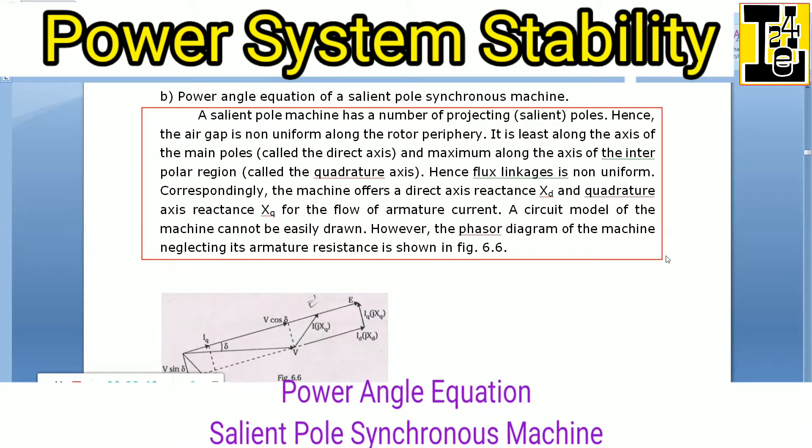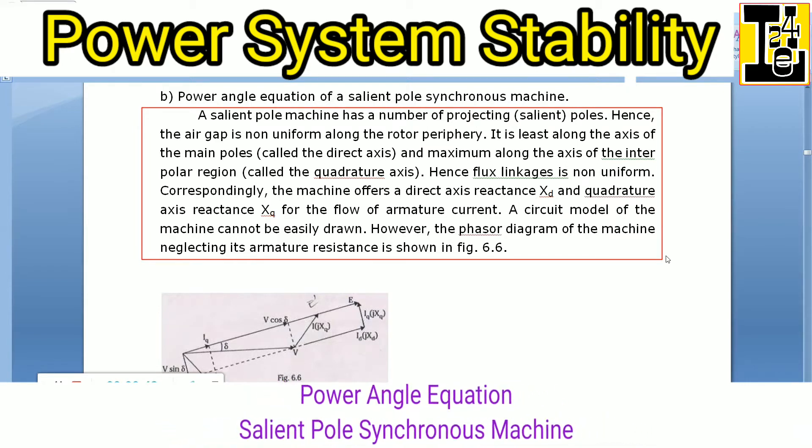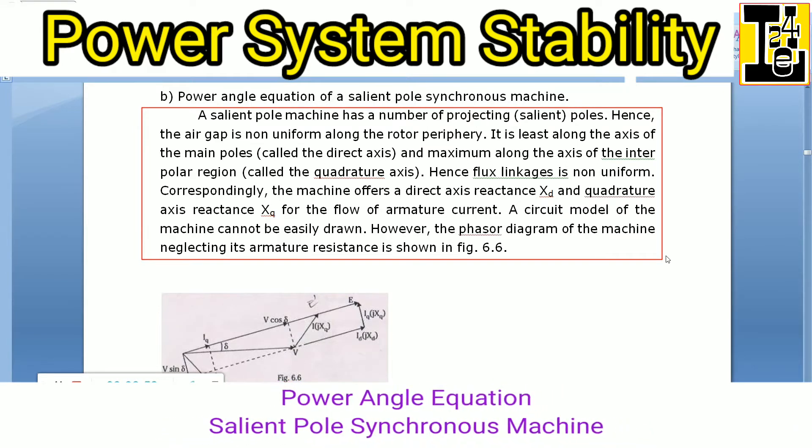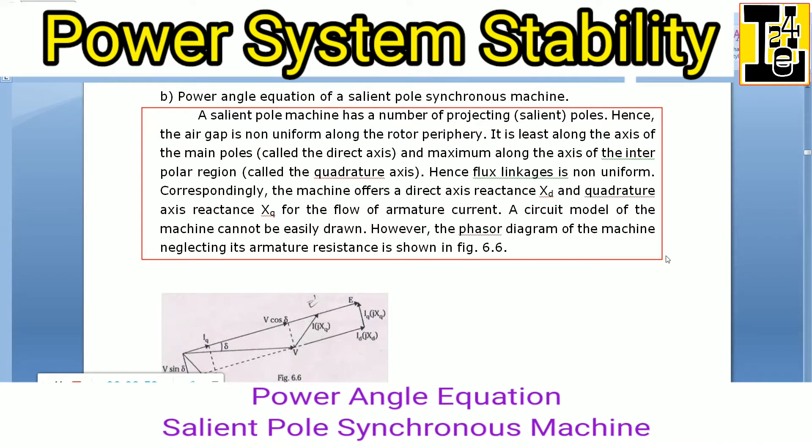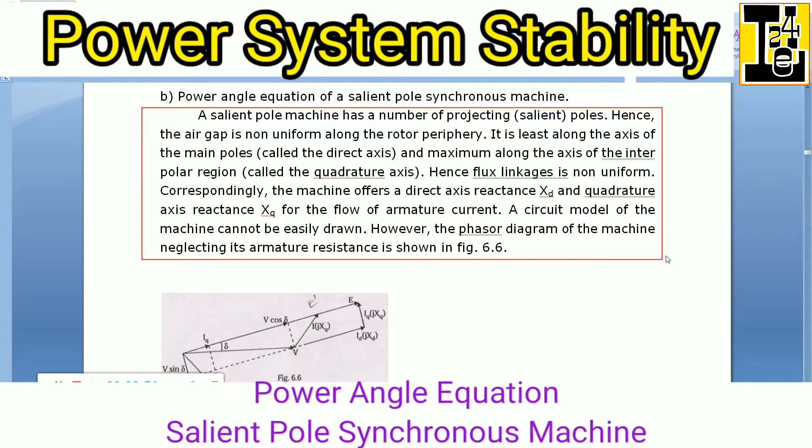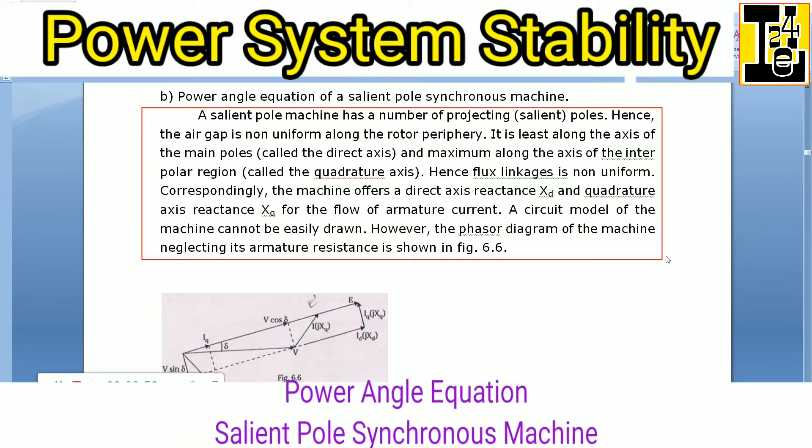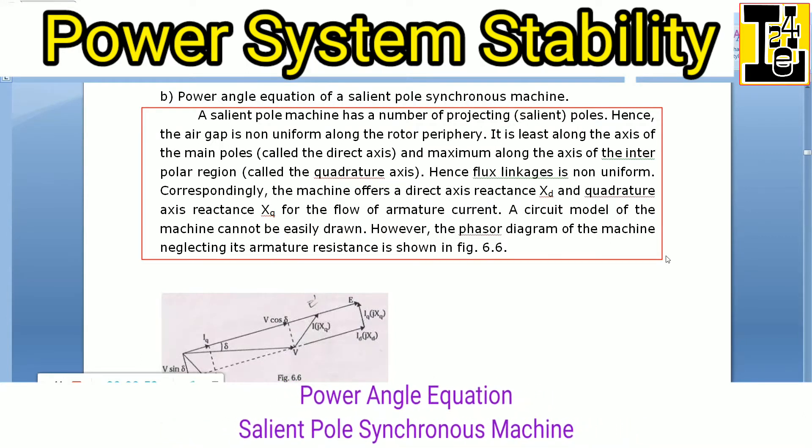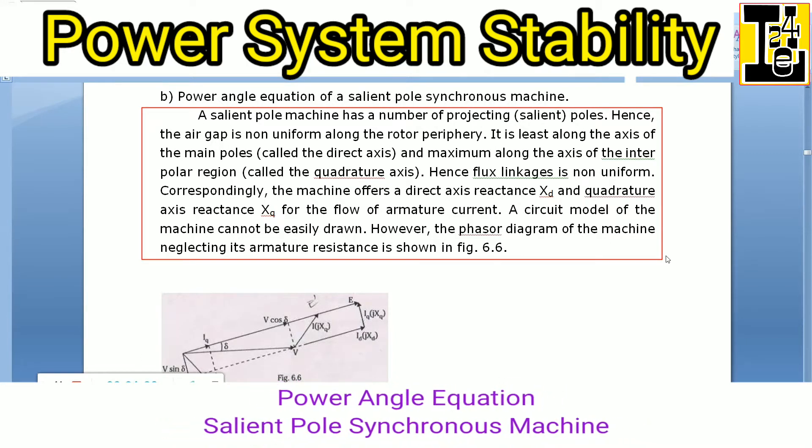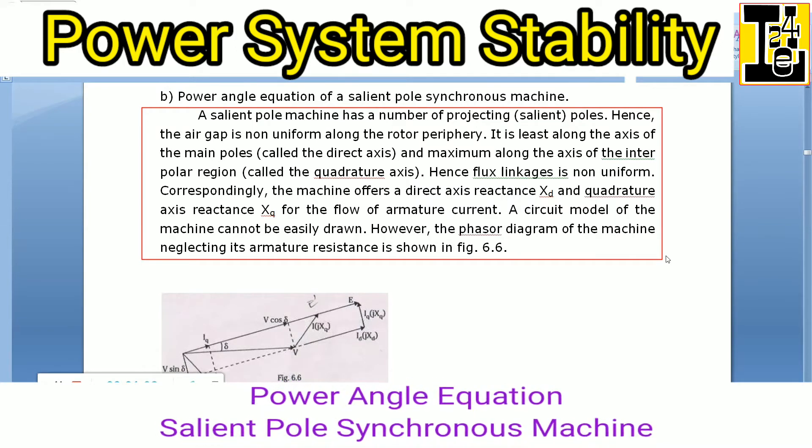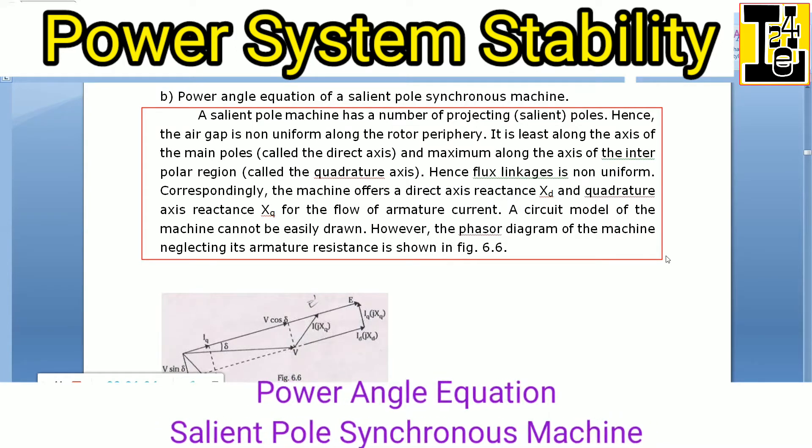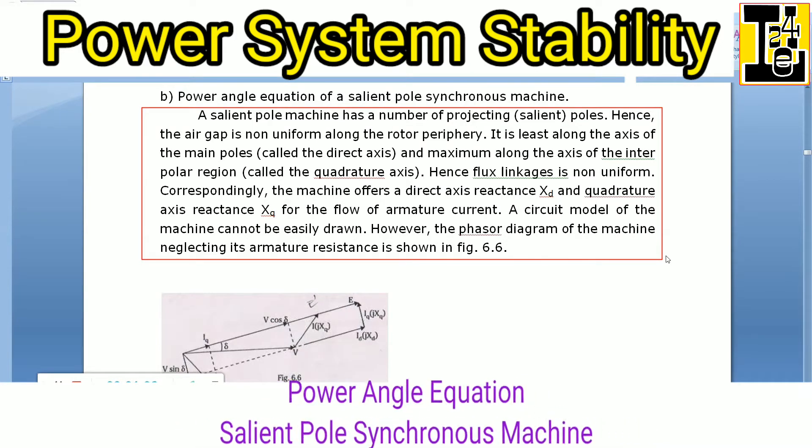Hence flux linkage is non-uniform. Correspondingly, the machine offers a direct axis reactance Xd and quadrature axis reactance Xq for the flow of armature current. A circuit model of the machine cannot be easily drawn.